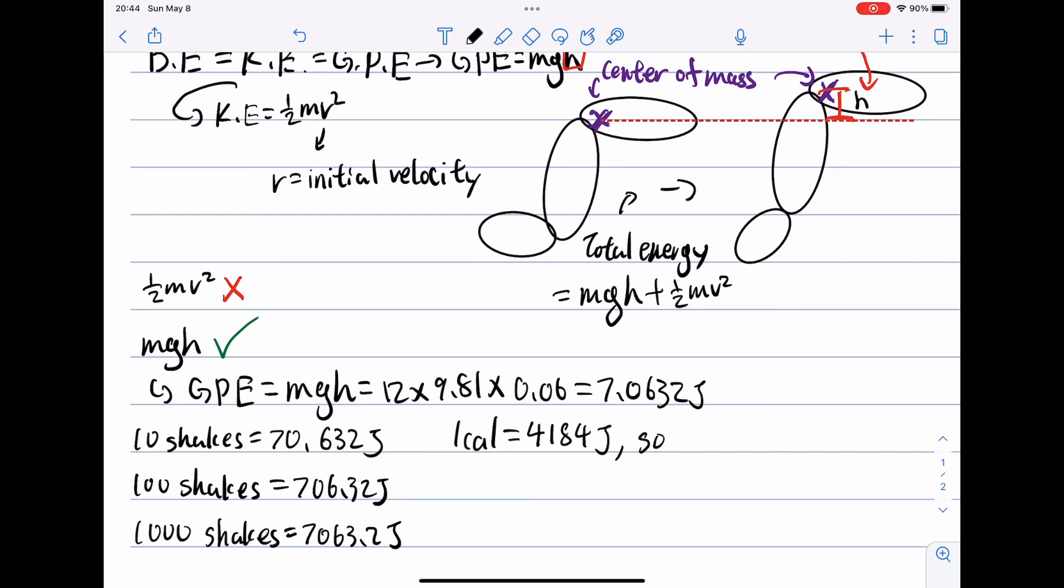Since 1 calorie is equal to 4,184 joules, to use up 1 calorie, you would have to shake your leg around 600 times.